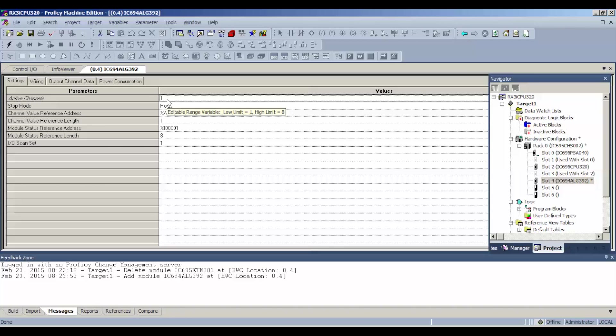The first thing I want to do is the active channels. Currently, there's only one channel active. I want to change that by highlighting it and pressing eight. I want to test all eight channels. The other thing that you guys want to notice is that your channel value reference address, where you're going to be putting the values in order to test the circuits is analog output, or AQ00001. When we open up the table, I'll show you guys where to find that address.